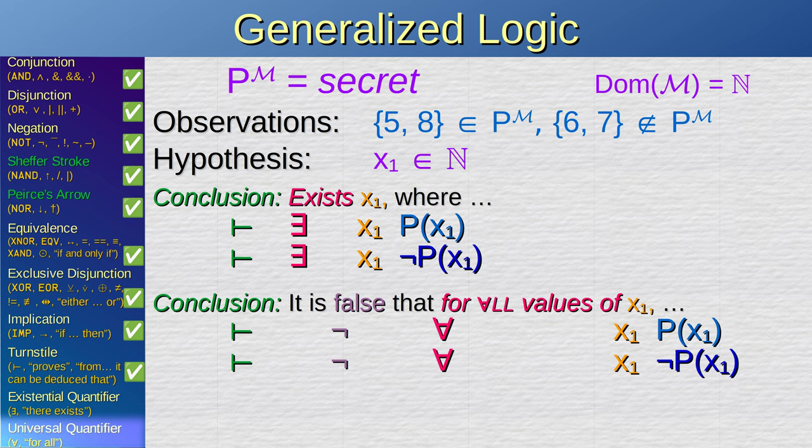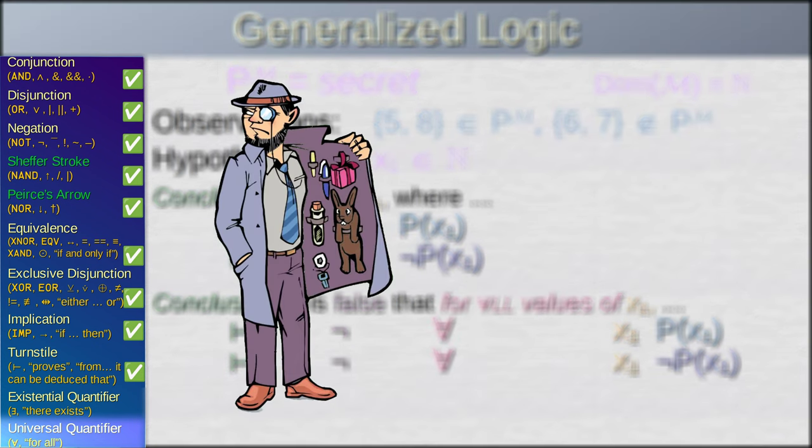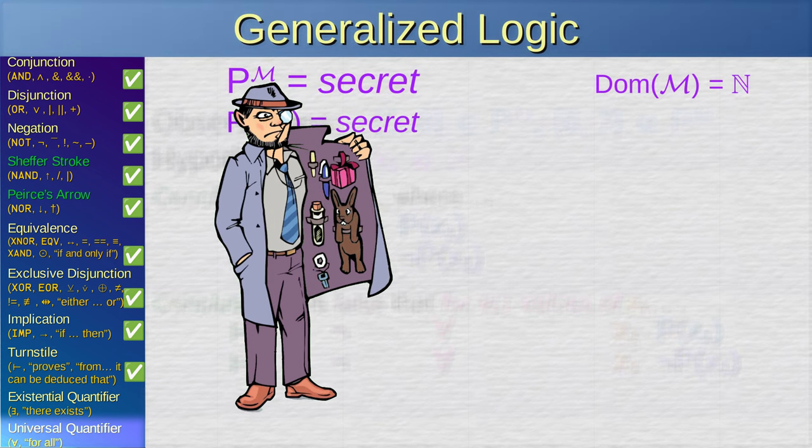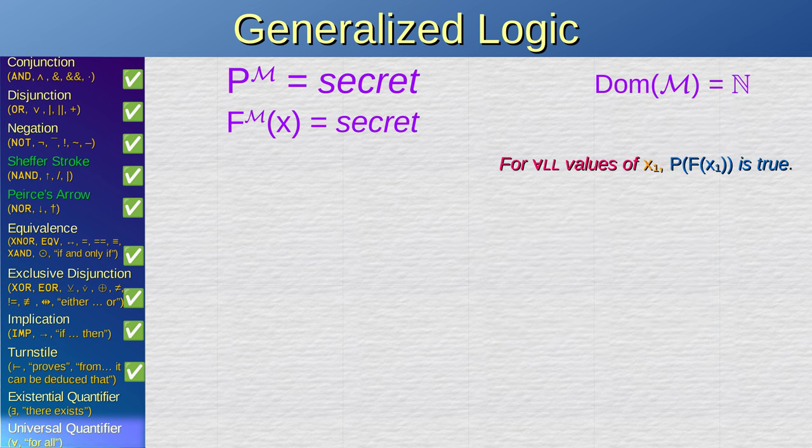We have successfully made some scientific observations. Now suppose that you meet the designer of the machine, and he gives you a function f, and he says that this function turns any input into values that the machine always accepts. In other words, for every imaginable value of x1, Px1 is true. How do we write that? Yep, just like before, just replace for all values with the inverted A.